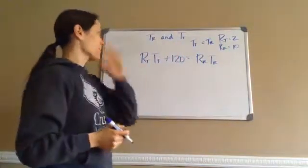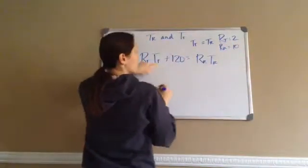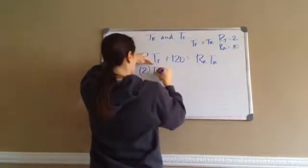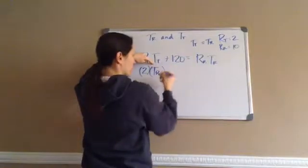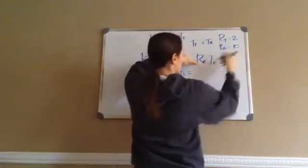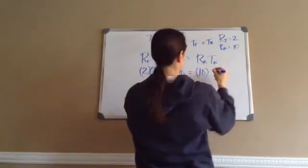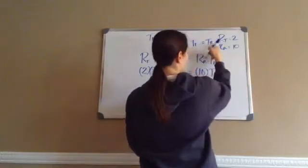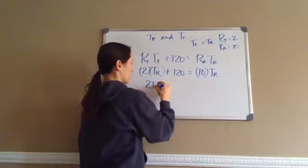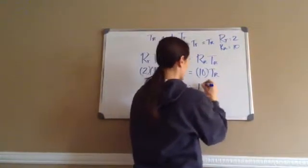So now let's put in information. RT is 2, TT is TR — so I'll put that in parentheses if you want. Plus 120 equals, what's RR? 10. Times TR. They only told us what TT was. So this is 2 times TR, which is 2TR, plus 120 equals 10TR.